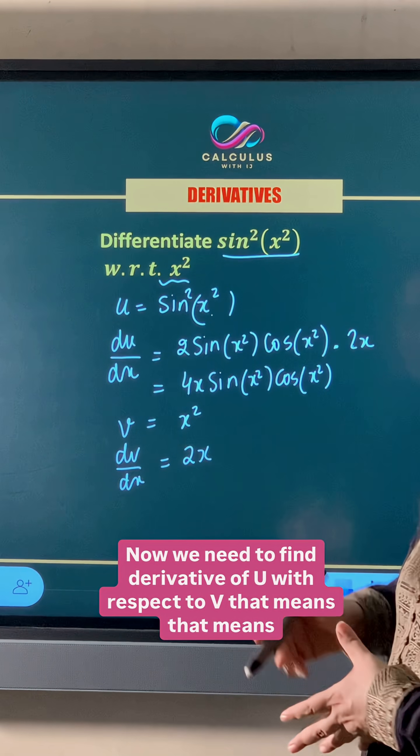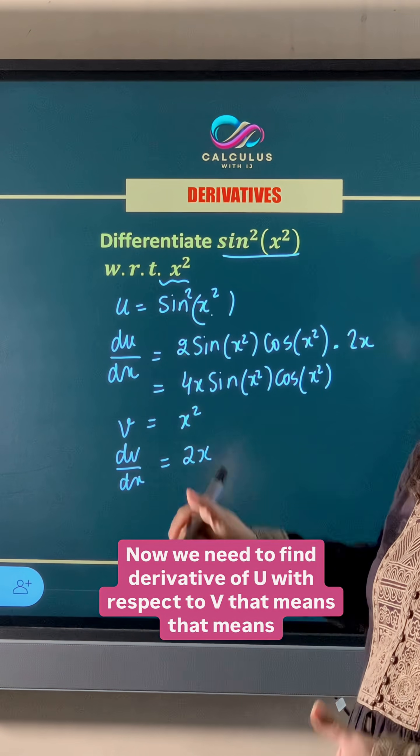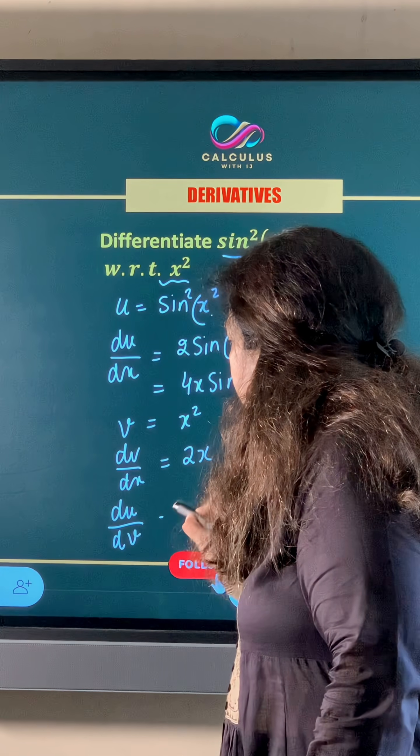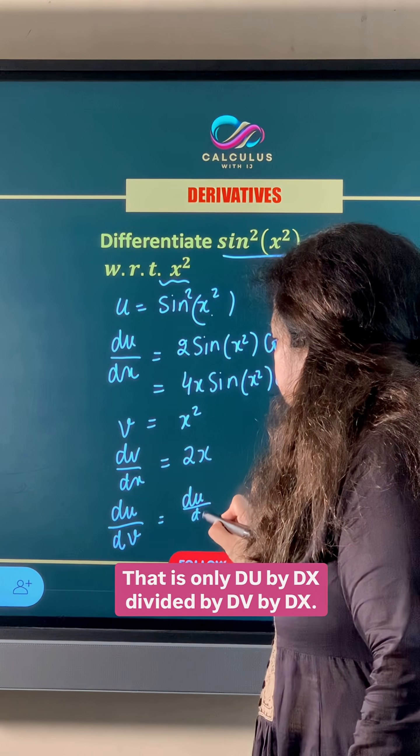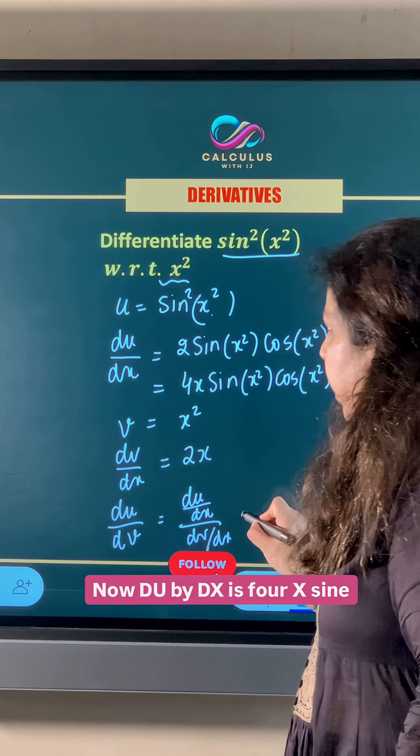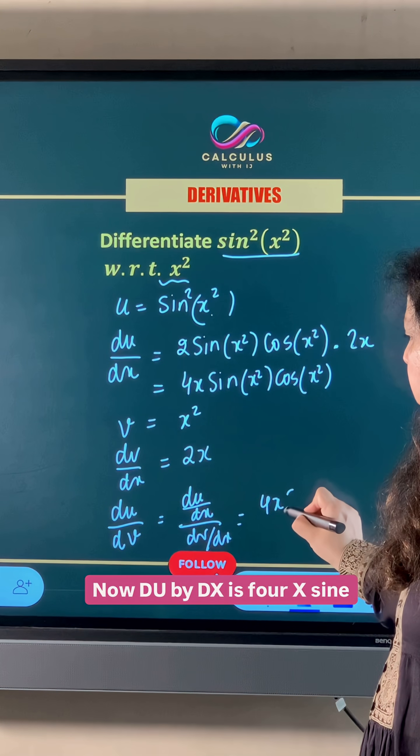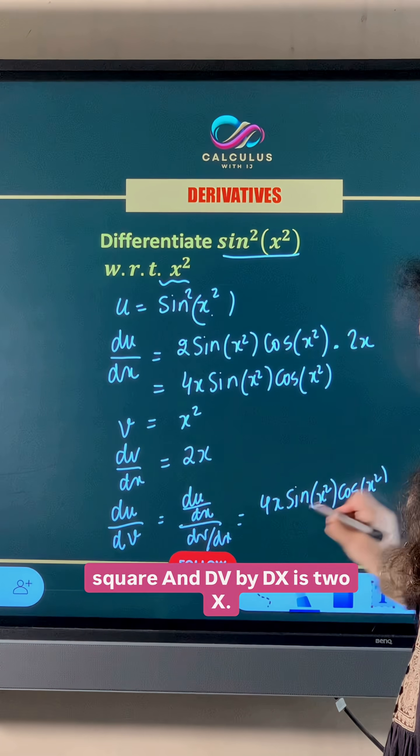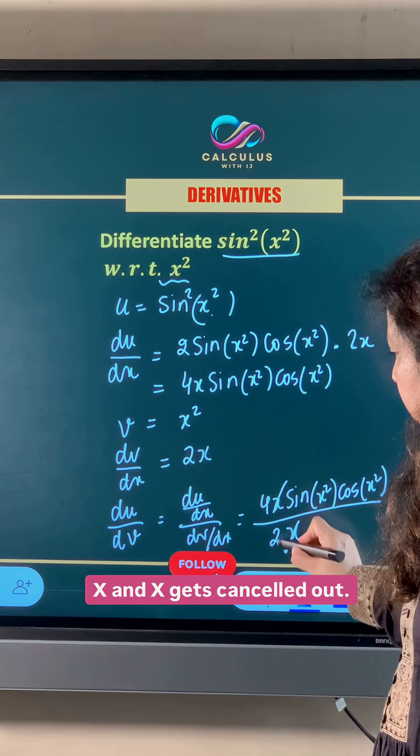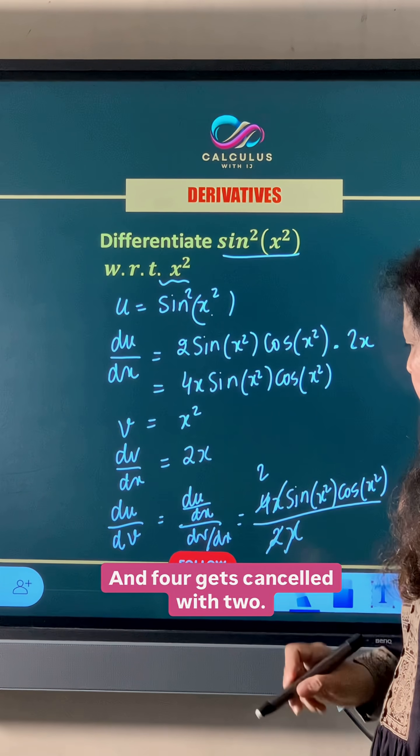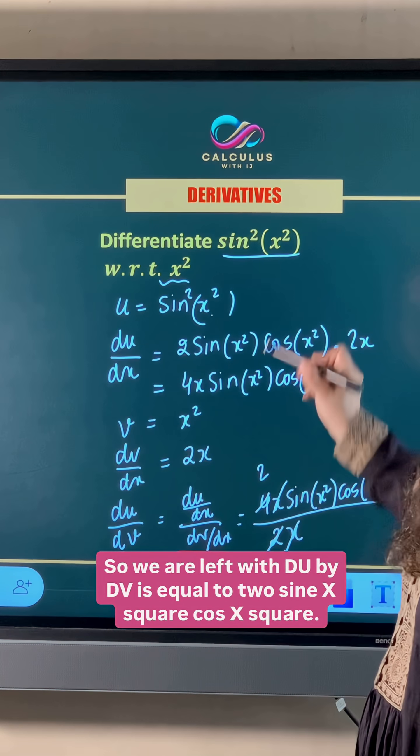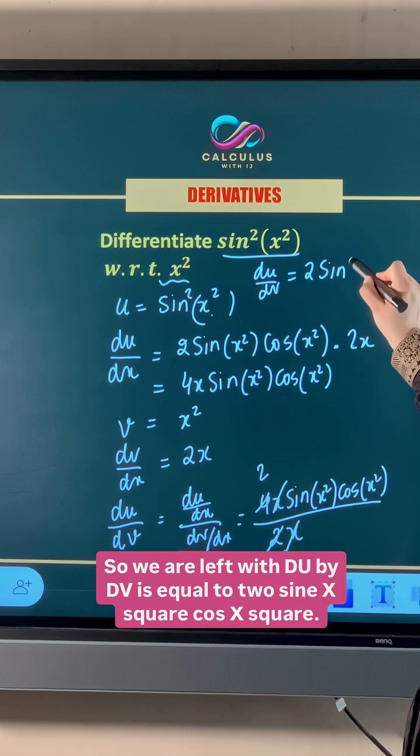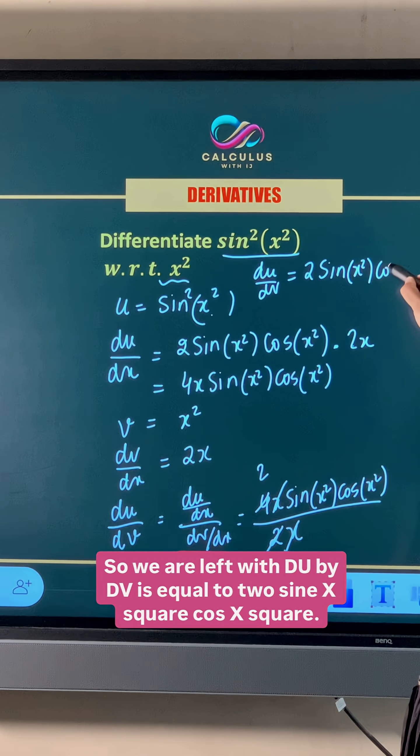Now we need to find derivative of u with respect to v. That means we need to find du/dv. That is only du/dx divided by dv/dx. Now du/dx is 4x sin(x²) cos(x²) and dv/dx is 2x. x and x gets cancelled out and 4 gets cancelled with 2. So we are left with du/dv = 2 sin(x²) cos(x²).